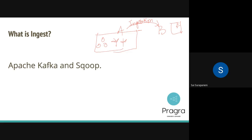There is something called Apache Kafka and Apache Sqoop, which I will be teaching you in this session. Apache Kafka is for near real-time streaming data. Apache Sqoop is for batch data. What's the difference between near real-time data and batch data?